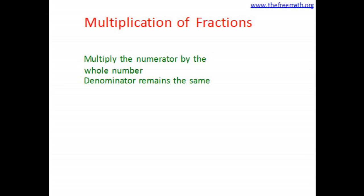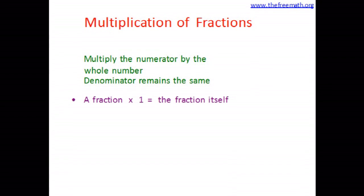Let's see something more about multiplying fractions. We know that when we multiply a fraction by a whole number, we multiply the numerator by the whole number and the denominator remains the same. So what would happen if I am multiplying a fraction with the whole number as 1? The answer would be the fraction itself, because numerator multiplied by 1 would be the same numerator.